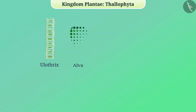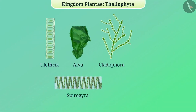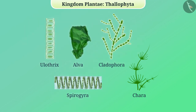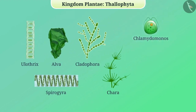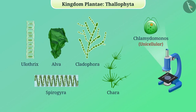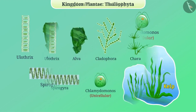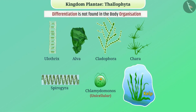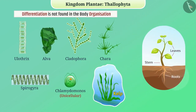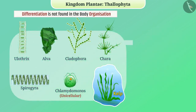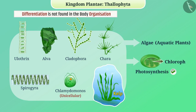Let's talk about thallophyta in detail. Plants like Ulothrix, Ulva, Cladophora, Spirogyra, Chara, etc. are included in the class thallophyta. Their size also varies — some organisms such as Chlamydomonas are unicellular and require a microscope to view them, whereas some organisms such as kelp are very large. Differentiation is not found in the body organization of these plants; that is, parts like roots, stem and leaf are not developed in them. All the plants in this group are commonly called algae. These are all aquatic plants. They can do photosynthesis because of the presence of chlorophyll and thus can make their own food — that is, they are autotrophic.